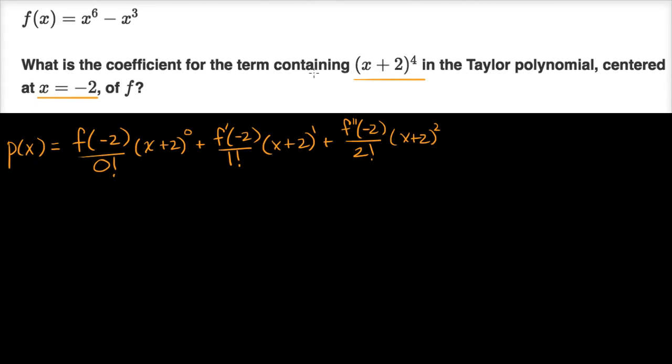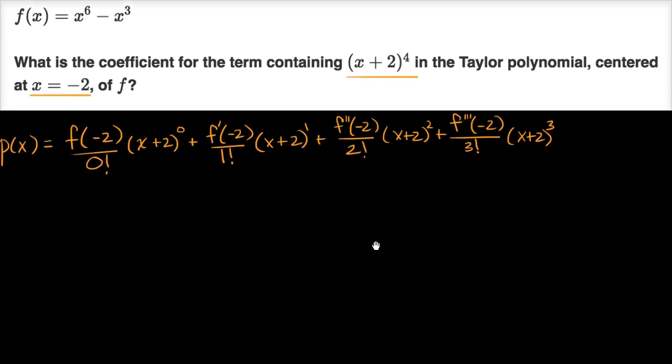Really all we care about is the one that has the fourth degree term. Actually, let me just write the third degree term too, just so we get fluent in this. So the third derivative evaluated at negative two over three factorial times (x+2) to the third power, and now this is the part that we really care about: plus the fourth derivative evaluated at x equals negative two, divided by four factorial times (x+2) to the fourth power.